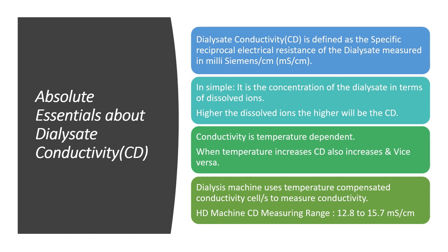Higher dissolved ions means higher conductivity. Besides, conductivity is temperature dependent — when the temperature increases, the conductivity of the dialysis fluid will also increase and vice versa. Dialysis machines usually use temperature-compensated conductivity cells to measure conductivity. In a normal hemodialysis machine, the conductivity measuring range is from 12.8 to 15.7 millisiemens per centimeter.